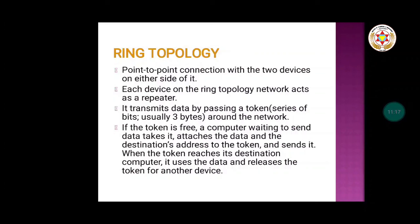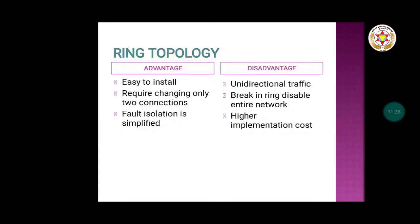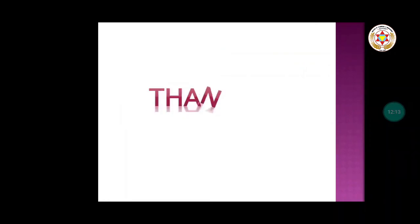The token contains the sender's and receiver's addresses. Each station in between acknowledges from the token that the message is for a particular receiver, and passes it ahead. When the message is ultimately received by the receiver, the token is released and can be used by another station for transmitting. Advantages include easy installation requiring changing only two connections, and simplified fault isolation. Disadvantages are unidirectional traffic, a break in the ring disabling the entire network, and higher implementation cost.